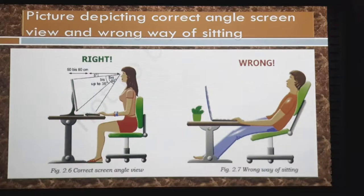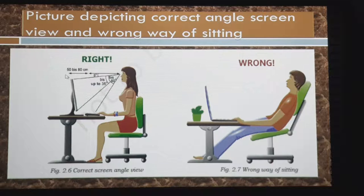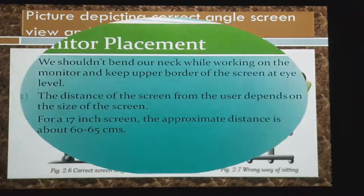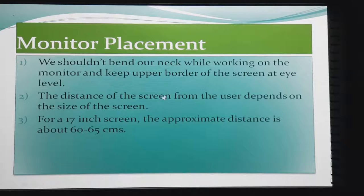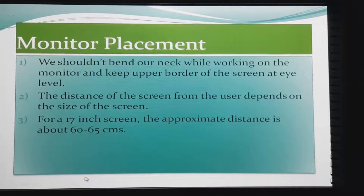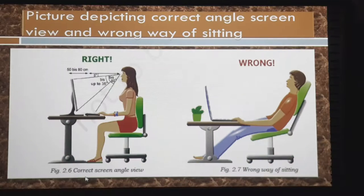Monitor placement can be better understood from the picture. The line of eyesight should align with the top part of the monitor at eye level. The distance of the screen always depends on its size. The bottom of the screen should maintain a particular angle — approximately 35 to 40 degrees — angle of depression with the line of our eyesight.